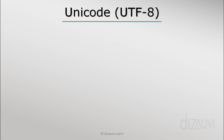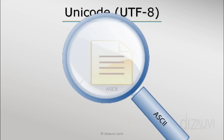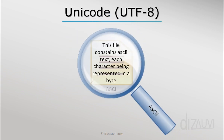In the last part we learned how the Unicode Consortium came together and came up with encodings like UTF-32 and UTF-16, and the problems associated with them. By now it was clear that the ASCII world would not accept any encoding in which the data size would increase. So any encoding that Unicode came up with had to be compatible with ASCII, and thus was designed the UTF-8 encoding scheme.